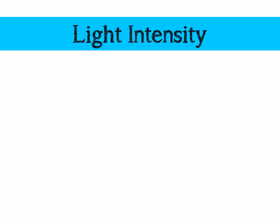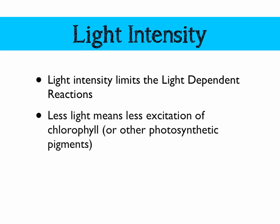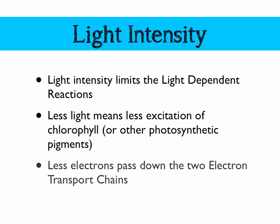Let's look at light intensity to begin with. Light intensity is going to limit the light dependent reaction because that's what the light dependent reaction requires. Less light is going to mean that less chlorophyll is going to absorb the light, which means less electrons are going to become excited, which will result in less electrons passing down the two electron transport chains.